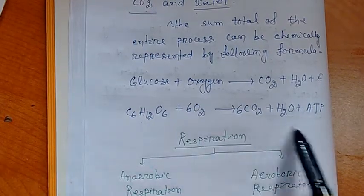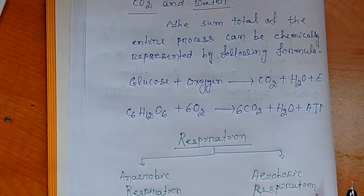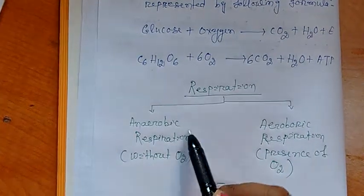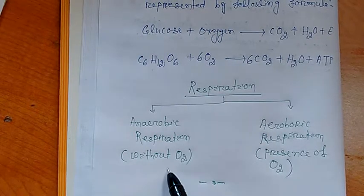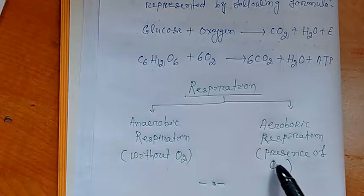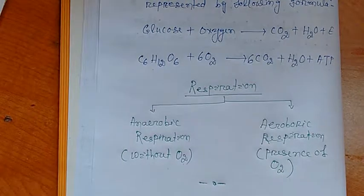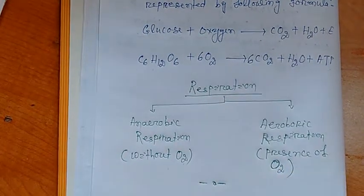So this is the formula of respiration. Next, types of respiration. Respiration is mainly two types: anaerobic respiration, which is done in the absence of oxygen, and aerobic respiration, which is done in the presence of oxygen.